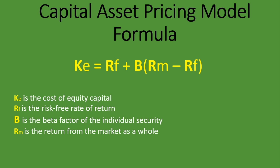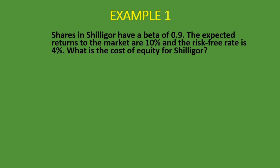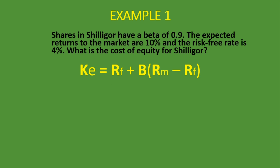Now that we know what the formula is, let's take a look at this example. We are told that shares in Shiligo have a beta of 0.9. The expected return to the market is 10%, and the risk-free rate is 4%. What is the cost of equity for Shiligo? The formula again for CAPM is: KE equals RF plus B, open bracket, RM minus RF.